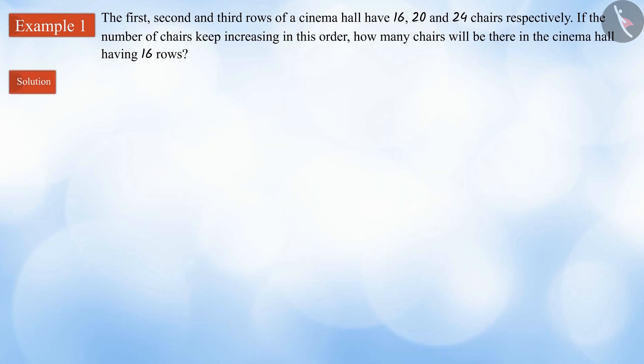According to the question, there are 16 chairs in the first row, 20 chairs in the second row and 24 chairs in the third row. What can you say about this list?